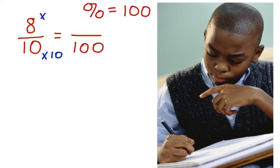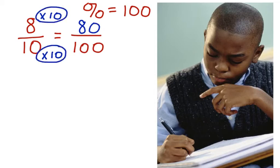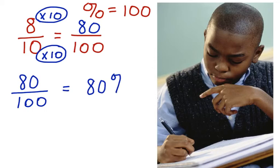8 times 10 gives me 80. Now, you may be wondering why we multiplied by 10. What we do to the denominator, we have to do to the numerator. 80 out of 100 can now be easily written as a percent. 80 out of 100 is equal to 80%.